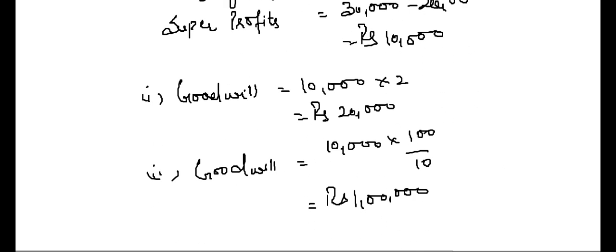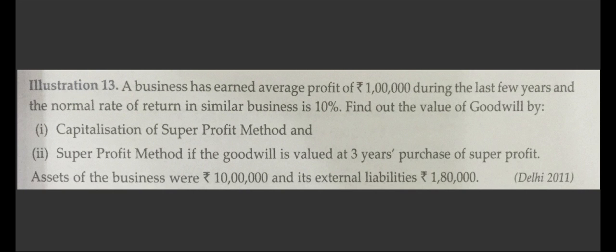This is the value of goodwill under the two methods. Next problem: a business earned average profit of 1 lakh during the last few years. The normal rate of return in similar businesses is 10%. Find out the value of goodwill by capitalization of super profit method and super profit method (3 years purchase). Assets of the business were 10 lakhs and external liabilities 1 lakh 80,000.